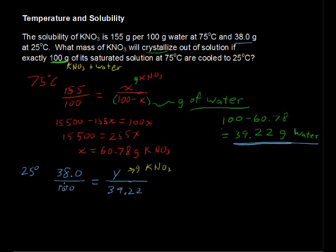Same ratio. Whether we have 100 grams of water or 39.22 grams of water, the ratio will stay the same, but the y is going to change. I'm just going to jump to the answer on this one. Y equals, when it is cool, we only have 14.90 grams of KNO3, I should say, still dissolved, still in solution.